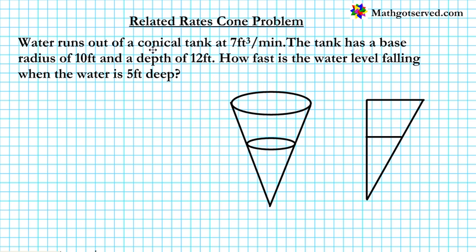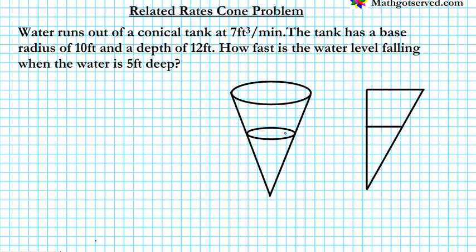Water runs out of a conical tank at 7 feet cubed per minute. The tank has a base radius of 10 feet and a depth of 12 feet. How fast does the water level fall when the water is 5 feet deep? It's always good to make a sketch of the situation so you can really understand what the problem is saying. So this is your conical tank right here and water is constantly flowing out of this conical tank.